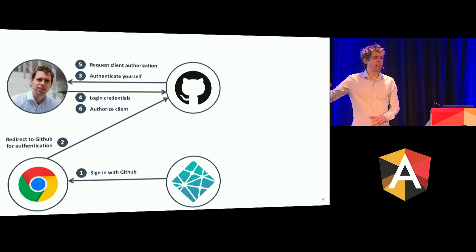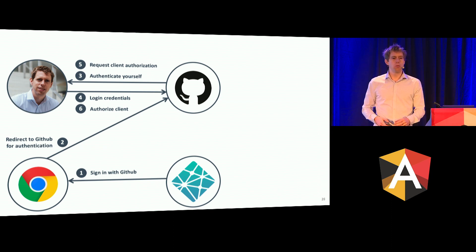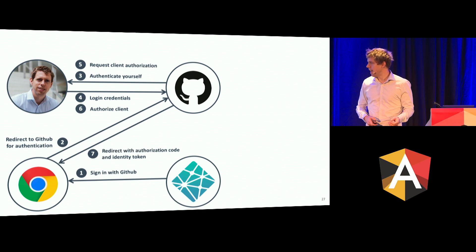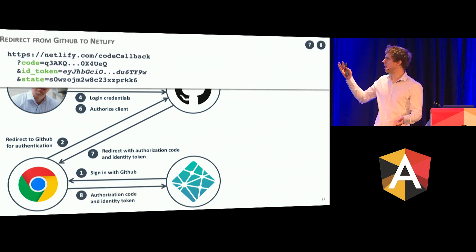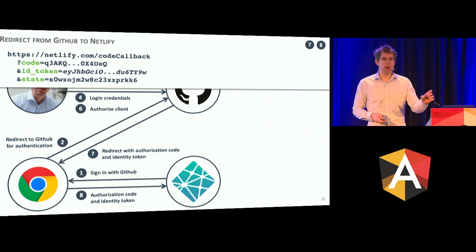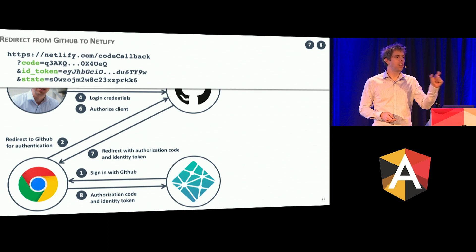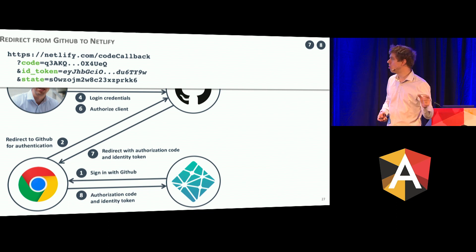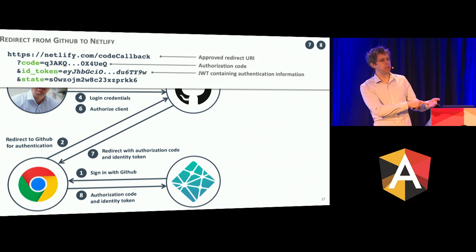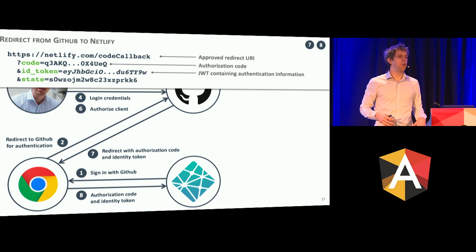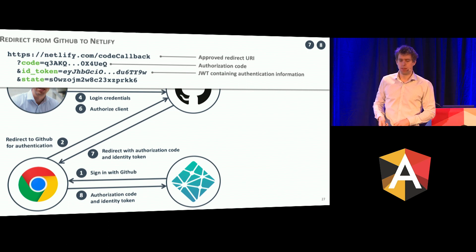Then GitHub has to send the flow back to Netlify — again, with a redirect. The redirect takes us back to Netlify and the URL is basically a callback to Netlify with the identity token as a parameter and the code as a parameter as well. That identity token contains the user's information — that's what Netlify is going to use to perform authentication. It says: Philippe Direct, picture is this and that. So Netlify can now instantiate the UI: "Hey, welcome, Philippe." That's it.